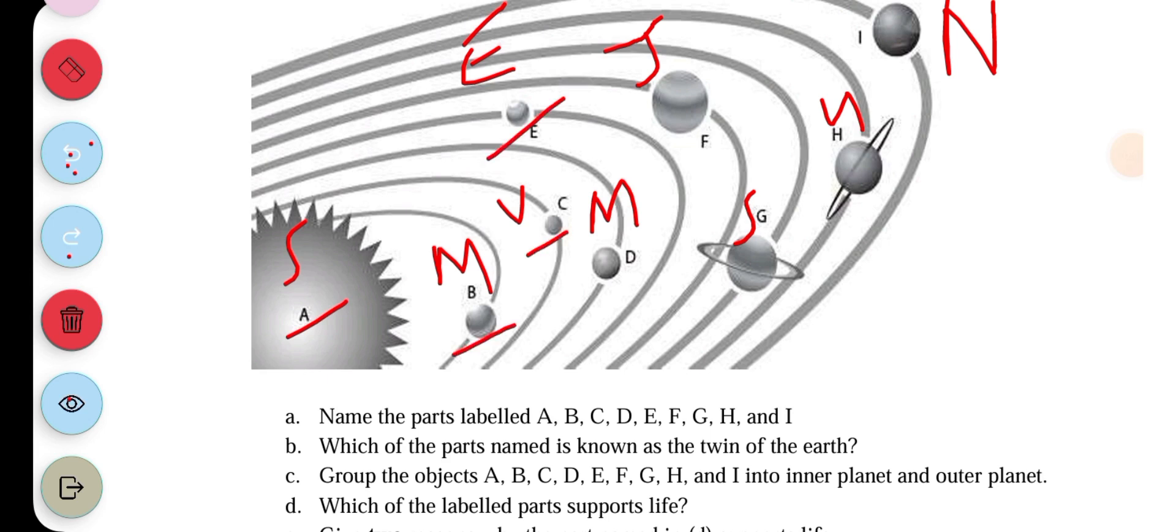The inner planets are Mercury, Venus, Earth, and Mars. The outer planets are Jupiter, Saturn, Uranus, and Neptune. So four for each side.